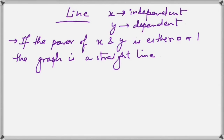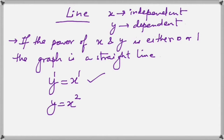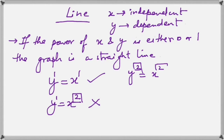Let me explain what that means. If I have an equation like y = x, the power of y is 1 and the power of x is also 1, therefore it is a straight line. If I take y = x², the power of y is 1 but the power of x is 2, therefore it will not represent a straight line. For y² = x², once again the power of y and x is not 0 or 1, therefore it is not a straight line.